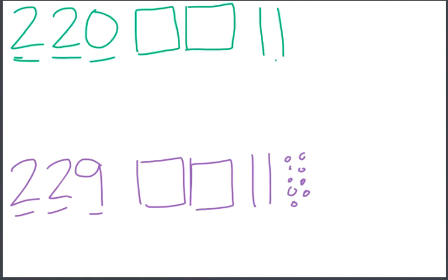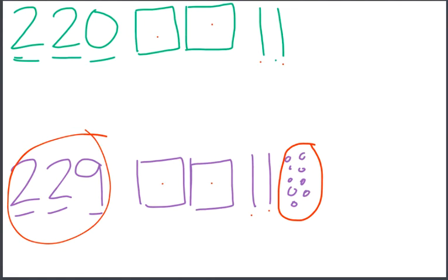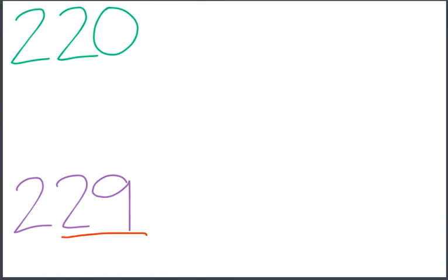Both numbers have the same number of flats and the same number of longs. But there are more cubes in 229 than in 220. We have nine cubes right here and nothing in the other number. So 229 is larger. You might explain your thinking by saying that I know that 29 is more than 20, so 229 has to be more than 220.